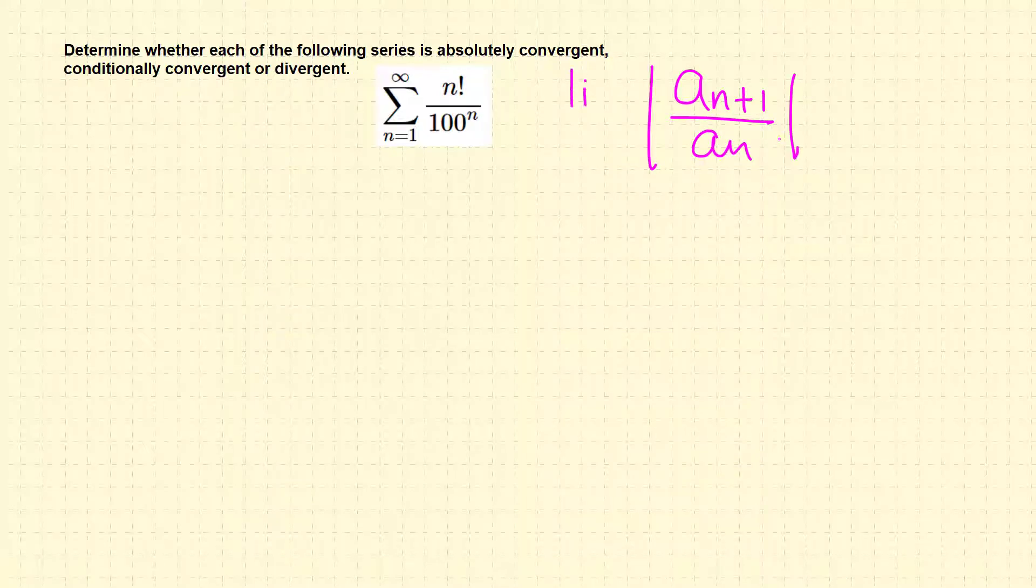If this number is less than 1, then the series converges absolutely. If this number is bigger than 1, then it diverges. If this is 1, the test fails.